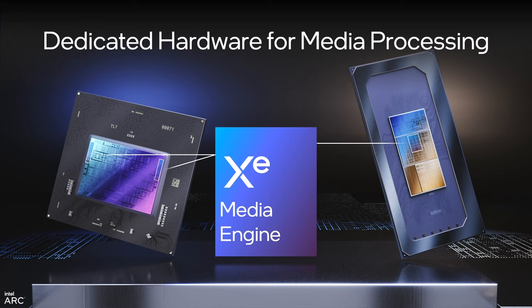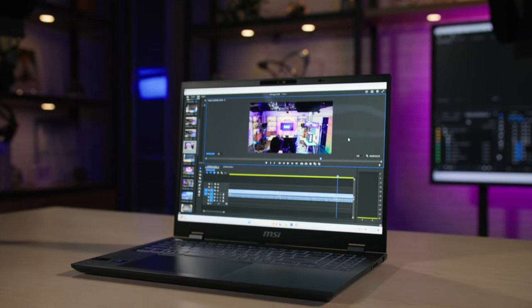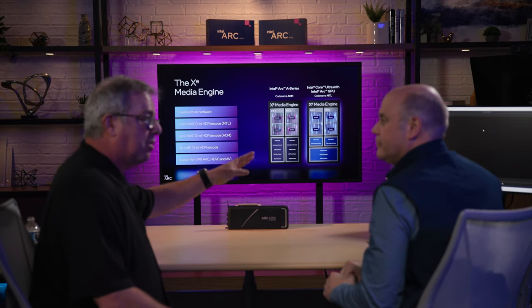Let's talk about how we go from codecs and compression to what we do inside our GPU. We've built what's called a media engine, responsible for doing all the encoding and decoding — all in hardware. It's present both in our Intel Arc GPUs and in our Intel Core Ultra CPUs with built-in Intel Arc GPUs. Essentially the same media engine is in both.